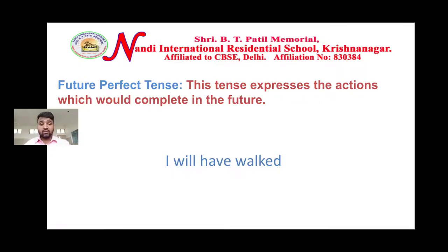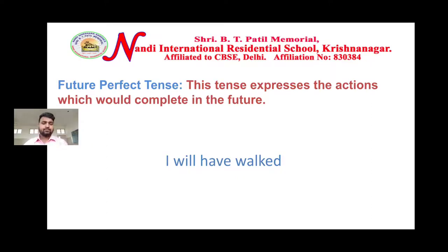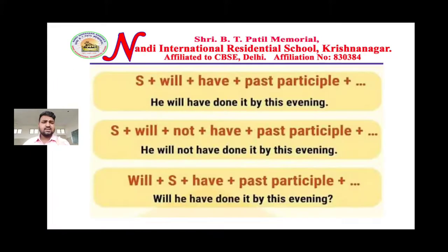We are assuming it — it's not certain, not particular, not clear whether the action is going to be completed or not. But we are saying that action will be completed by tomorrow. For example: 'I will have walked up to 10 kilometers by tomorrow.' Let's learn how we can frame different kinds of sentences using future perfect tense.